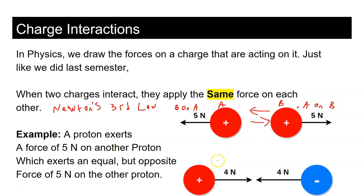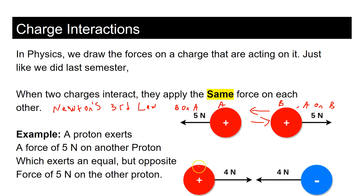For two opposite charges — a proton and an electron — the electron is pulling the proton to the right with four newtons, and the proton is pulling the electron to the left with four newtons. They're pulling each other closer to each other.